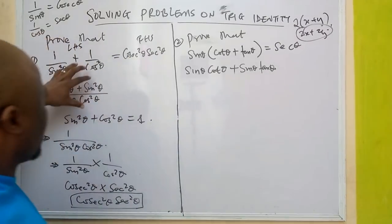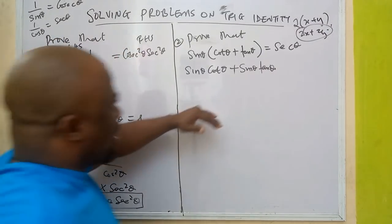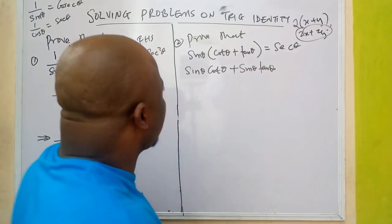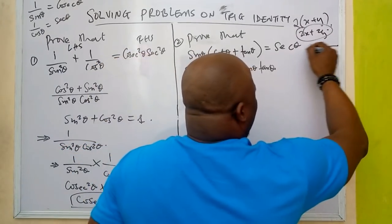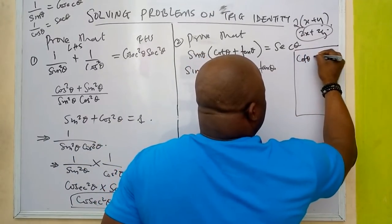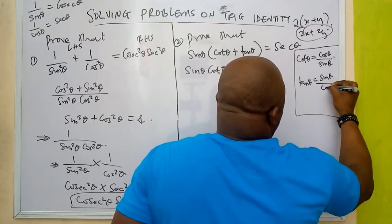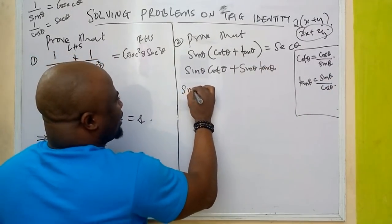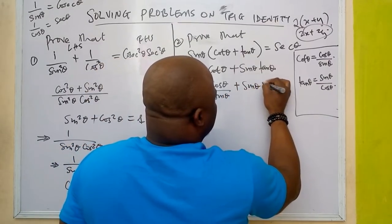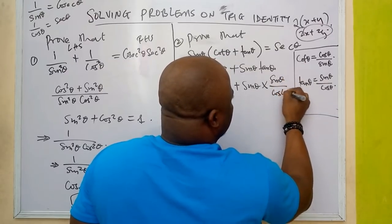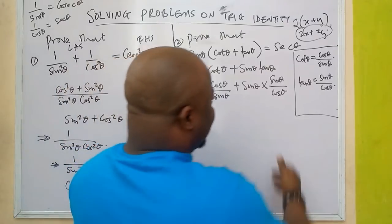Now, from the identities I covered in my last class: cosθ can be written as cosθ/sinθ — wait, actually tanθ is sinθ/cosθ. So my sinθ times cosθ/sinθ, and then sinθ times sinθ/cosθ for the tan term. We have changed tanθ to sinθ/cosθ and applied the substitution.